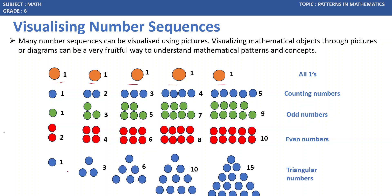Triangular numbers are formed when we arrange numbers in the form of triangular buttons. 1, then 1 plus 2 is 3 — we can arrange in the form of a triangle. Next, 1 plus 2 plus 3 is 6, which is a triangular number. Then 1 plus 2 plus 3 plus 4 is 10. And 1 plus 2 plus 3 plus 4 plus 5 is 15. As these numbers can be represented in the form of a triangle, we call them triangular numbers.